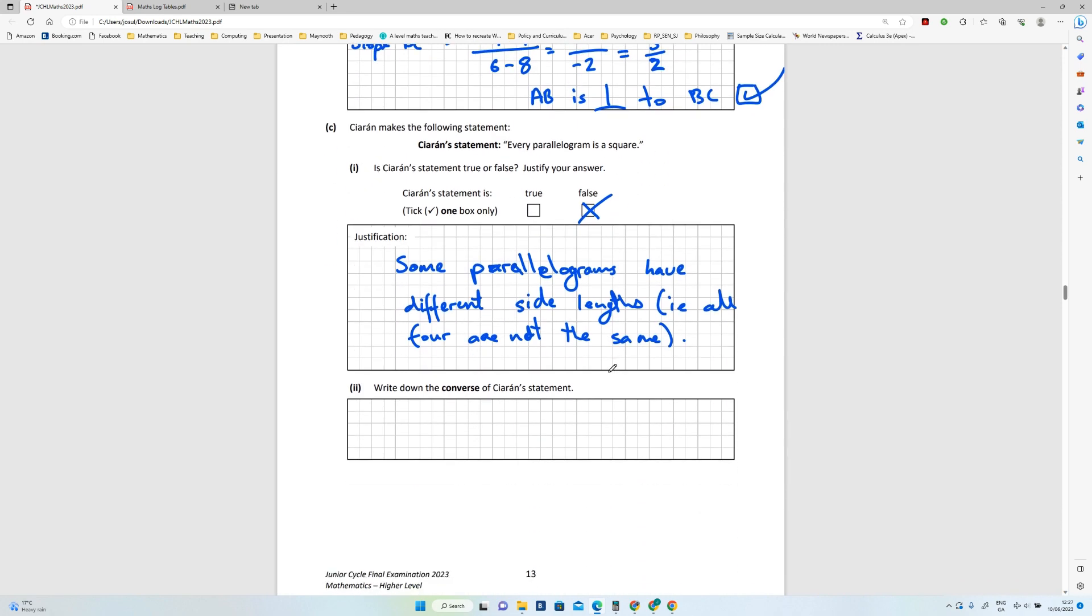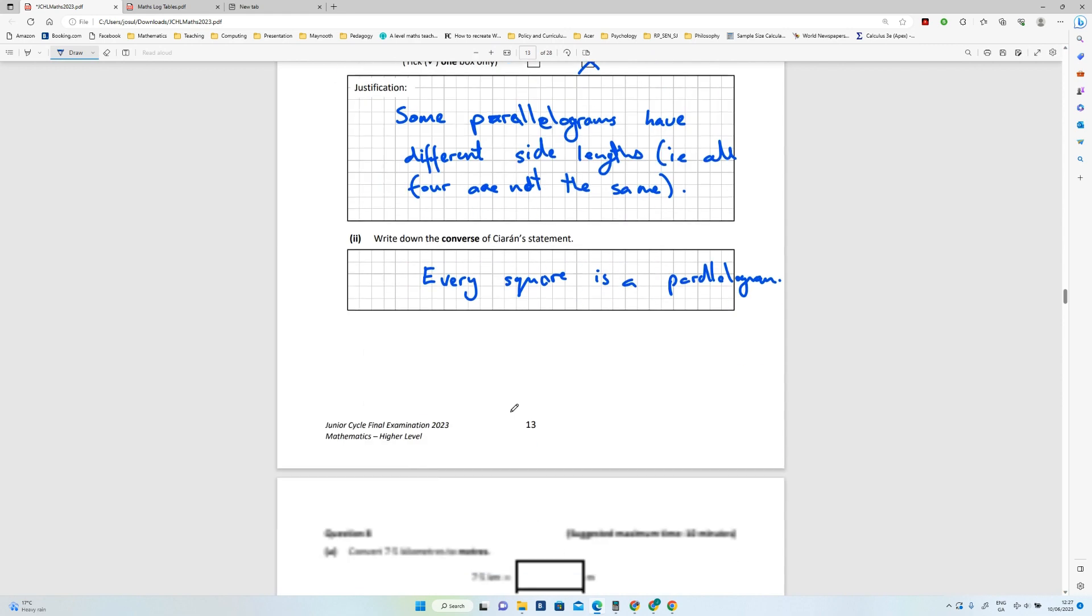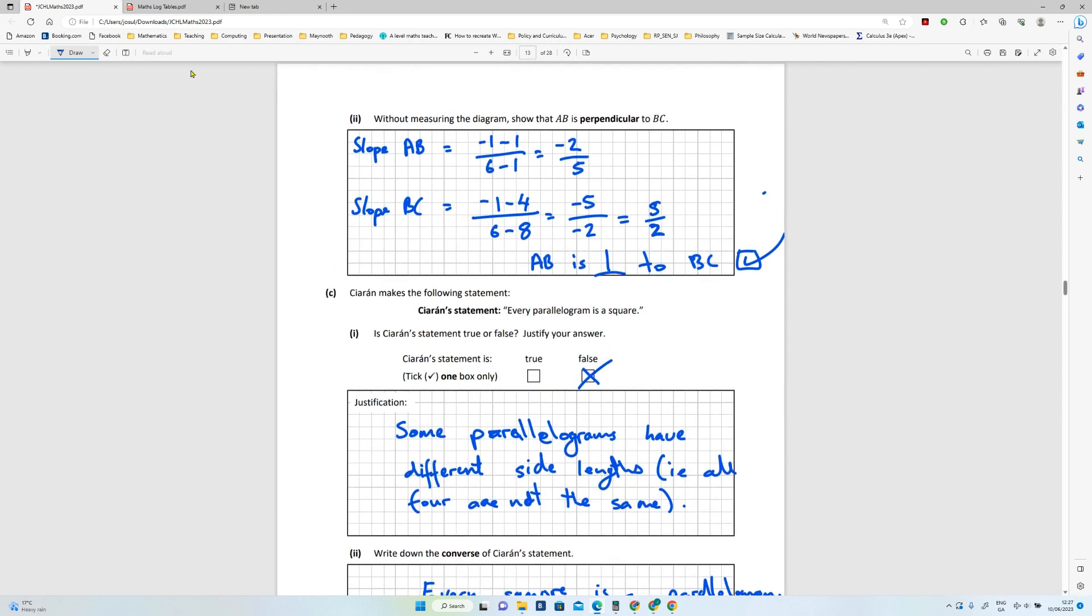Write down the converse of Ciarán's statement. Now this is true. Every square is a parallelogram. Now that is correct. And that's it for question seven.